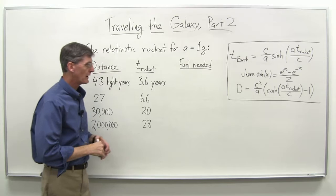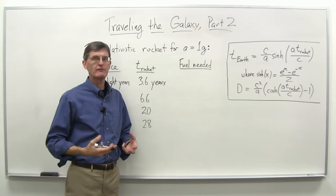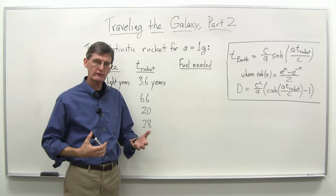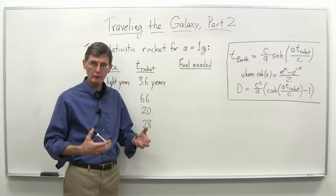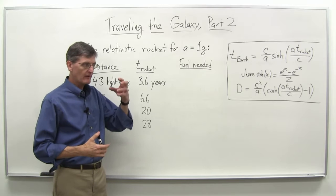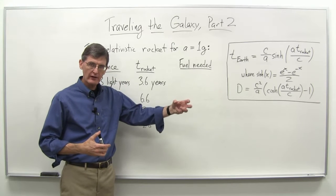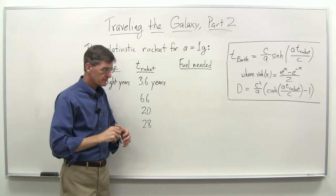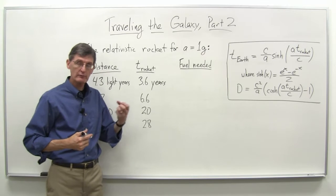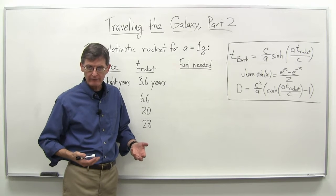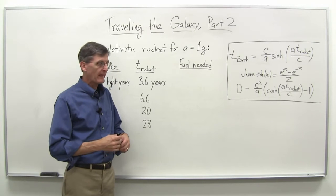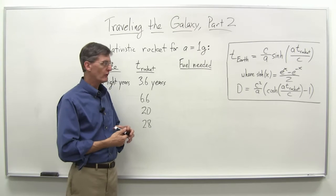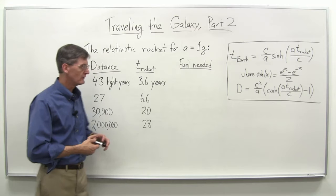In a previous video, we talked about the possibility of traveling the galaxy, traveling to the center of the galaxy. Our motivation for this was the twin paradox. Once we understood that the person on the rocket traveling to the center of the galaxy and back again could end up making the trip in a reasonable amount of time, whereas when they got back, the time that had elapsed on Earth was many thousands of years.